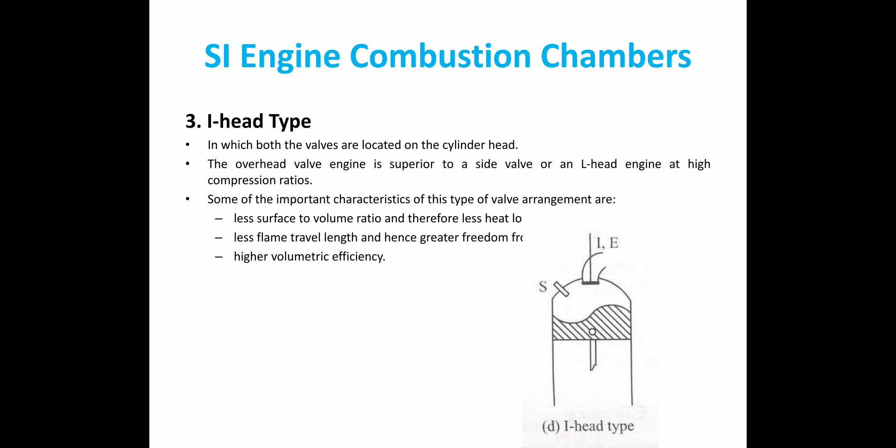And third one is the I-head type combustion chamber. So in this type of combustion chamber, both the valves are located on the cylinder head, so it is called overhead valve. They are superior to side valve or L-head valve engines at high compression ratios. So there are certain important characteristics which are noted here. First is the less surface to volume ratio and therefore less heat loss. Less flame travel length and hence greater freedom from knocking. The flame travel length is less and the knocking tendency will be less here. Also, high volumetric efficiency because we can go for larger valves or better valve lifts happening here. So we will get higher volumetric efficiency.